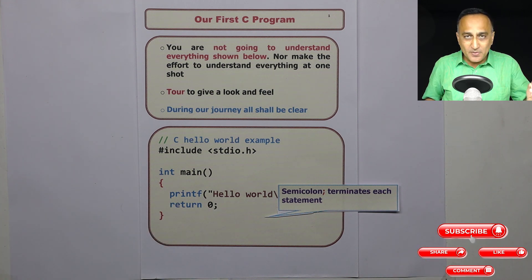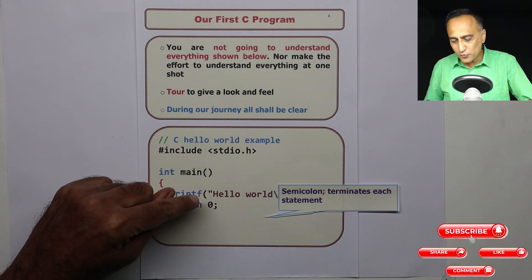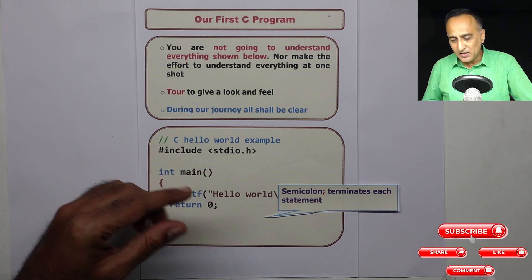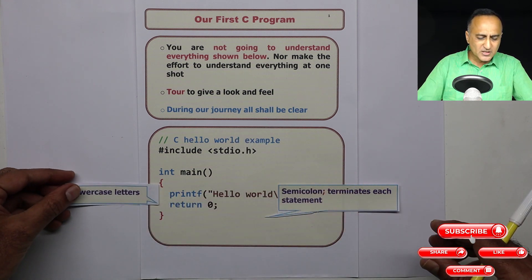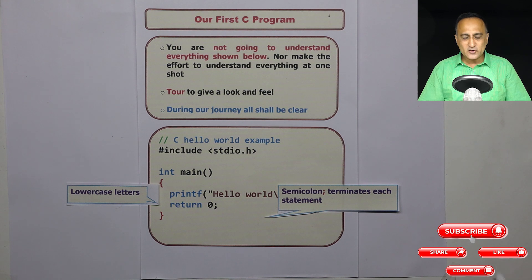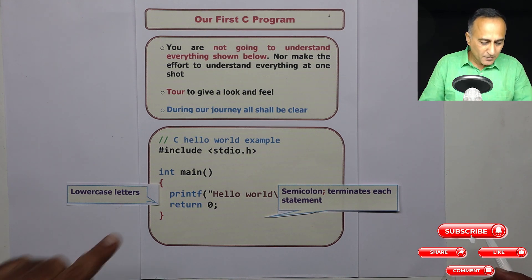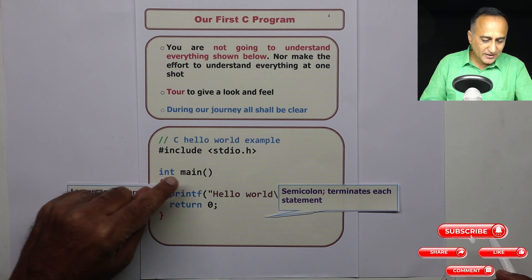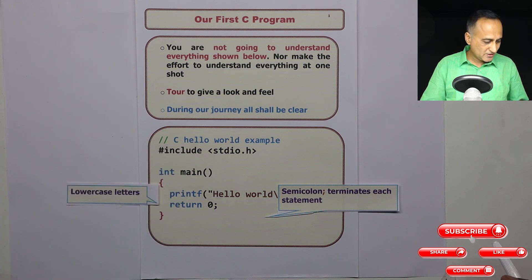If you have been paying attention, you will have noticed that almost everything is in lowercase except what is within double quotes. So in C, almost everything is going to be in lowercase. This concept of lowercase and uppercase you will understand as we go ahead, but pretty much printf, return, int, and main are all in lowercase.